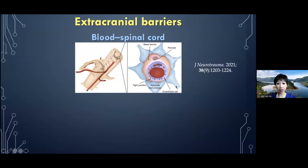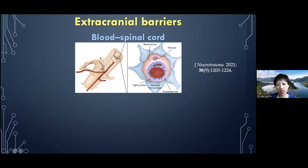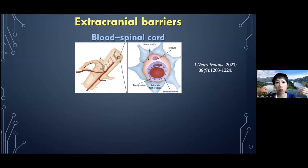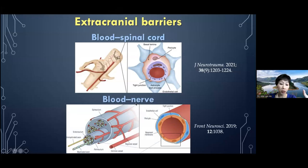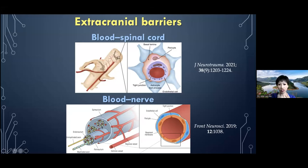The blood-spinal cord barrier is analogous to the BBB with pericytes and astrocytes, but somewhat looser — making the cord more susceptible to disease and injury and a bit more permeable. This is why for CNS therapies like chemo or gene therapy, we often do lumbar punctures and inject at the lumbar level or C1-2, as it's easier to access and deliver to the cord than within the brain. The blood-nerve barrier in peripheral nerves — even looser — is important for peripheral nerve injections, with the epineurium and endoneurium forming an interstitial space regulated by pericytes and endothelial cells.